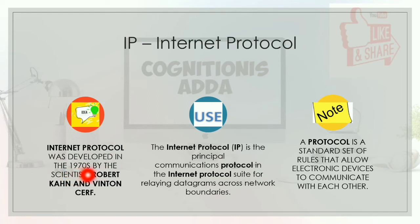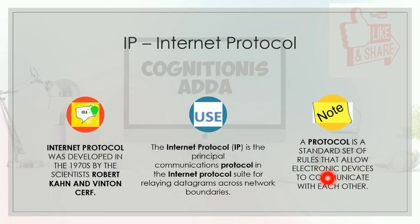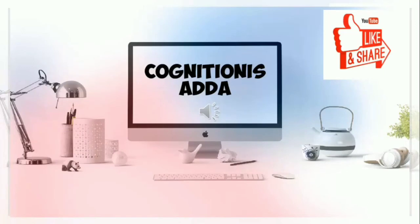Next is IP — Internet Protocol. Internet Protocol was developed in the 1970s by scientists Robert Kahn and Vint Cerf. IP is the principal communications protocol in the internet protocol suite for relaying datagrams across network boundaries. A protocol is a standard set of rules that allow electronic devices to communicate with each other.